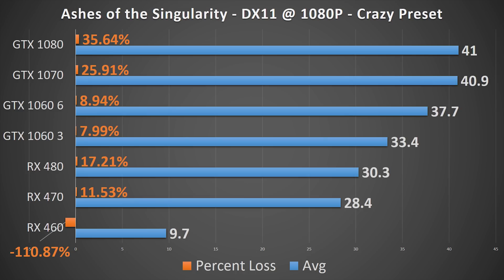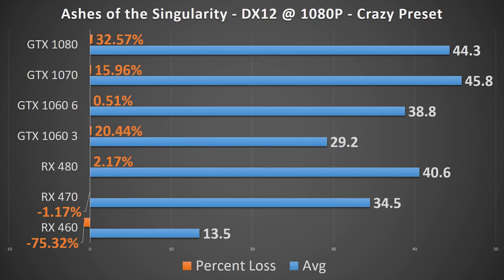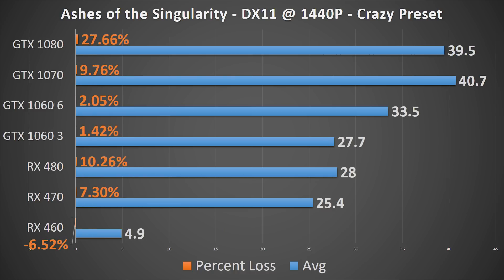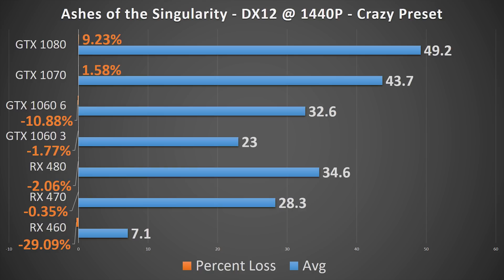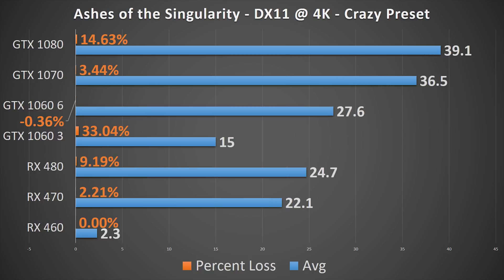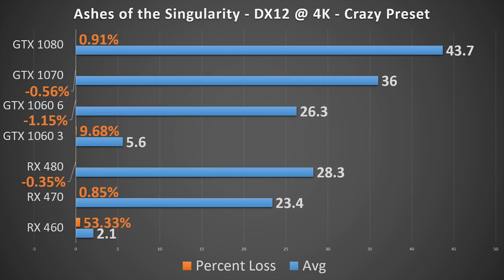With Ashes of the Singularity first up — the most CPU-bound game tested — the limiting effects of the i3 are immediately apparent, with double-digit percentage losses in most cards, save the RX 460 and both GTX 1060s at 1080p DX 11. DX 12 at 1080p allows all AMD cards to perform roughly the same, while the Nvidia cards mostly suffer significant drops. At 1440p, DX 11 shows losses in most cards, but in DX 12 only the GTX 1080 has much more headroom to grow. At 4K, DX 11 still hurts most cards, however DX 12 frees up most of them, with the 1080 only suffering a modest loss.